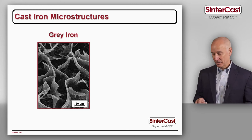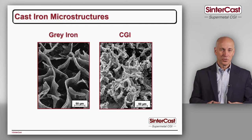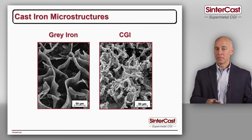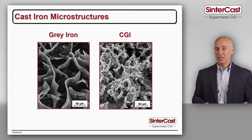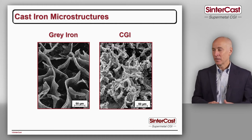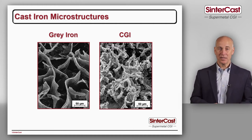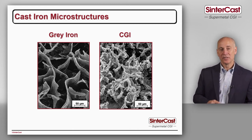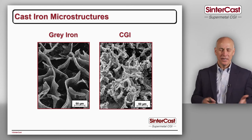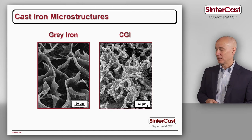In compacted graphite iron the shape of the graphite is quite different. It isn't individual short and thick particles but more like the coral you see on the bottom of the ocean — tangled and twisted into the iron. On the macro scale we've taken away the linear path for the crack to travel, and on the micro scale the bumpy surface anchors the graphite into the iron, making it more difficult for a crack to travel along that surface.